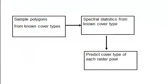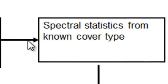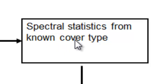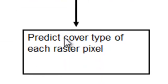Welcome back. This week we're going to do something called supervised classification — basically we're going to create a land cover map from a satellite image. It's a three-step process: first we need sample polygons of known cover types, then we extract pixel values and spectral statistics from those polygons, and finally we use those statistics to predict the cover type for every pixel in the satellite image.